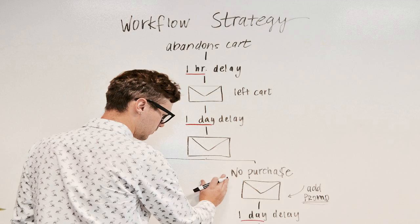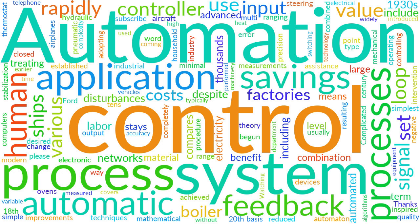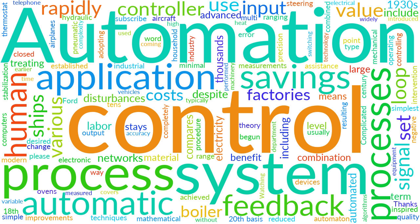The mathematical basis of control theory was begun in the 18th century and advanced rapidly in the 20th. Automation has been achieved by various means including mechanical, hydraulic, pneumatic, electrical, electronic devices and computers, usually in combination. Complicated systems such as modern factories, airplanes and ships typically use all these combined techniques.